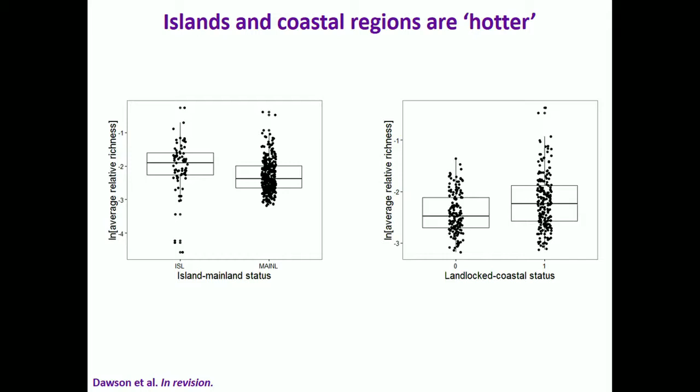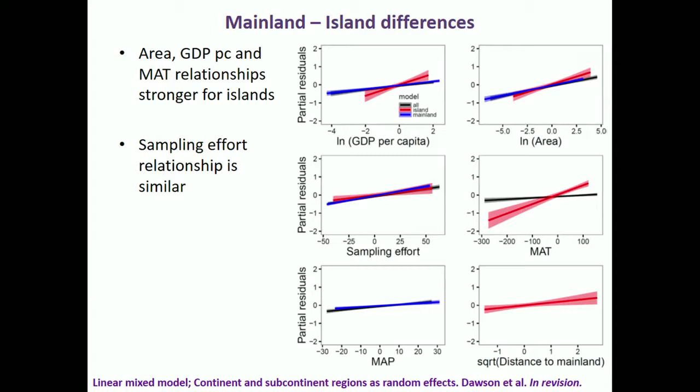Looking at continuous variables, splitting mainland (blue lines) and island regions (red lines): there's a stronger, steeper relationship for area, GDP per capita, and temperature for islands compared to mainlands. For both islands and mainland, the sampling effort relationship is similar in strength. Mean annual precipitation shows only a relatively weak relationship for mainland regions.